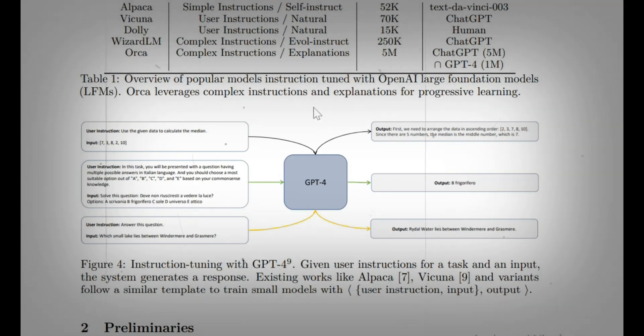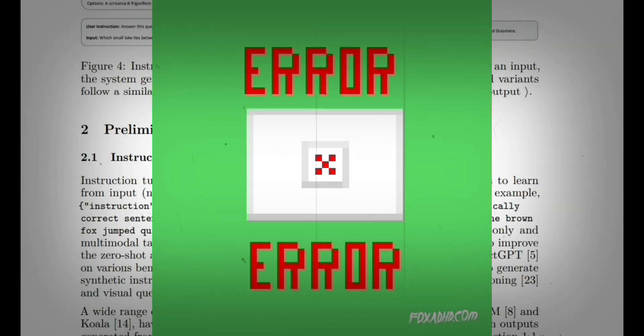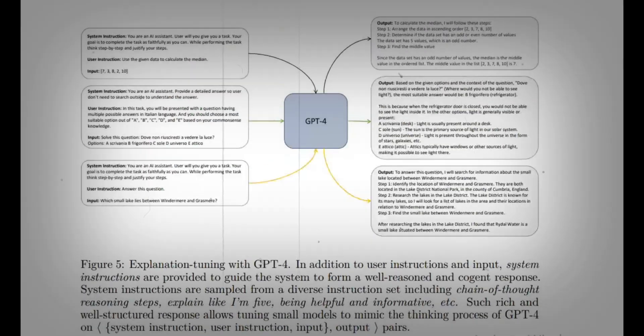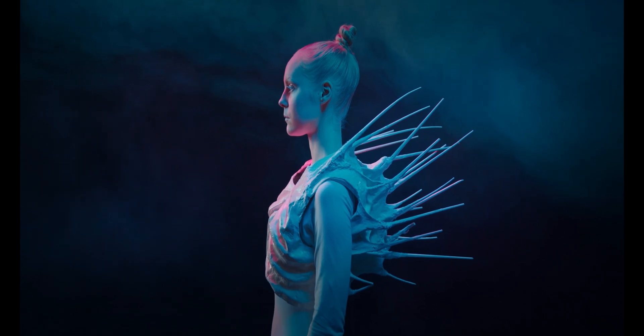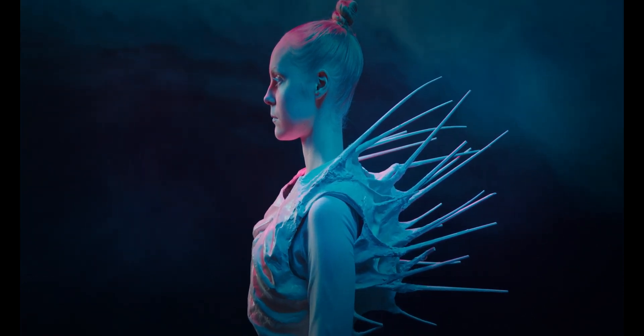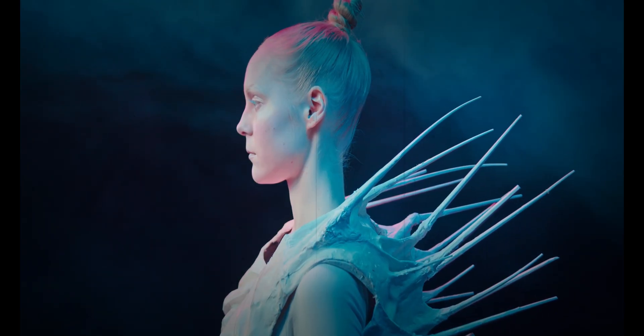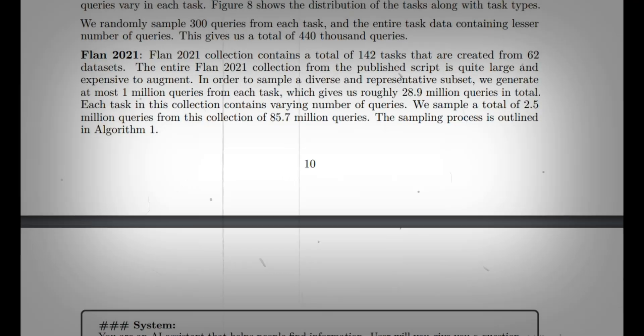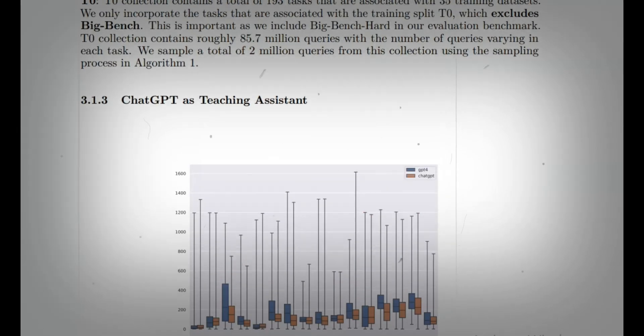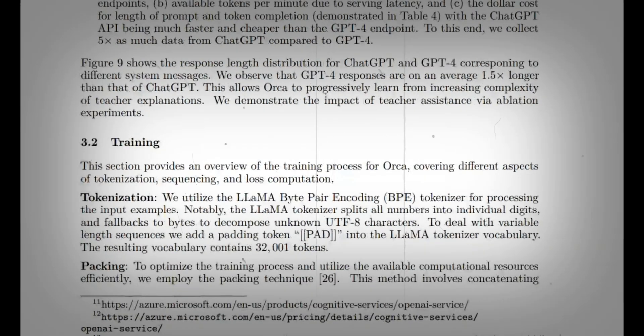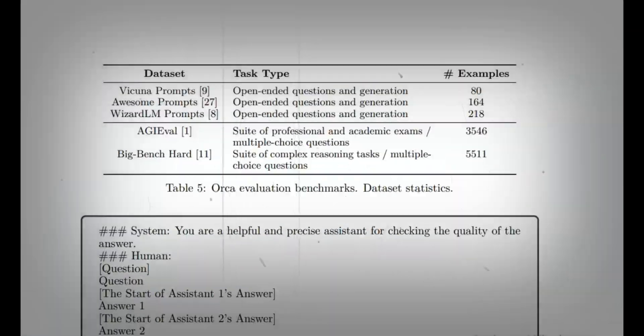Now, you might be wondering how Microsoft achieved this impressive feat. The secret lies in a technique called imitation learning. Orca learns to imitate the reasoning process of large foundation models like ChatGPT and GPT-4. By leveraging rich signals from GPT-4, including explanation traces, step-by-step thought processes, and complex instructions, Orca elevates its capabilities to a whole new level.